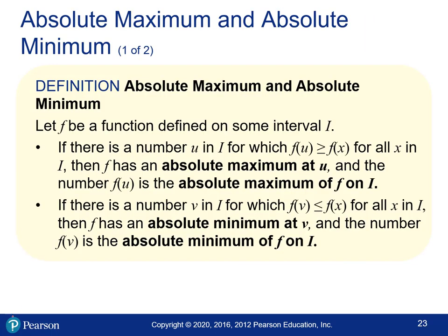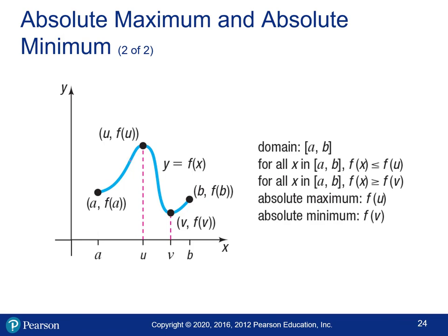Now let's talk about absolute maximums and minimums, as distinct from local ones. The difference is that instead of focusing on a local neighborhood, you're looking at the entire graph. The absolute maximum is the highest point on the whole graph, and the absolute minimum is the lowest point. A local max might also be the absolute max if it happens to be the highest point on the entire graph.